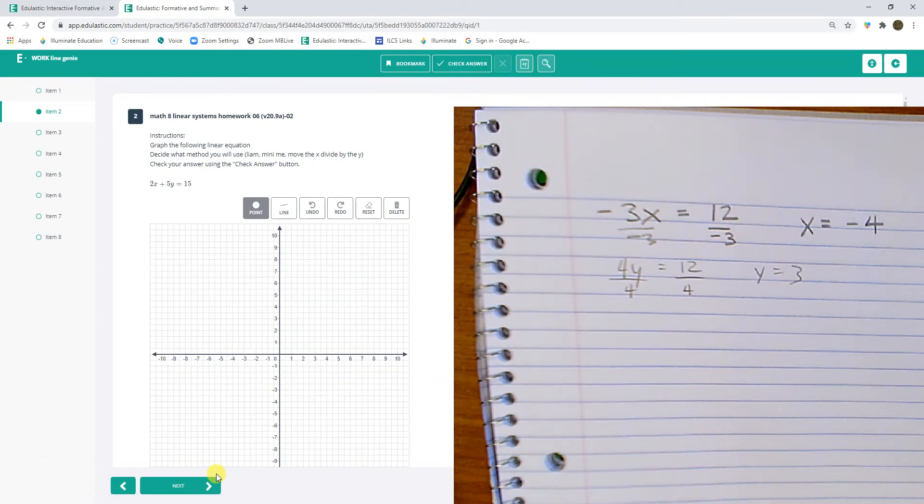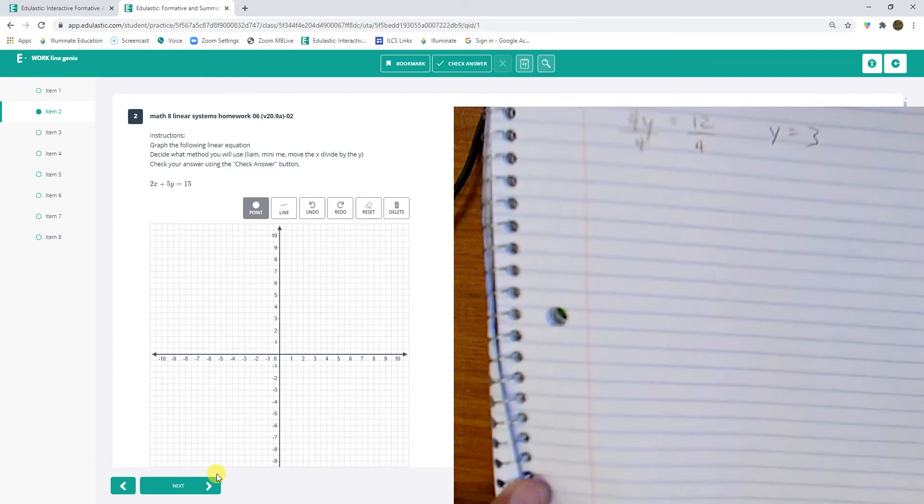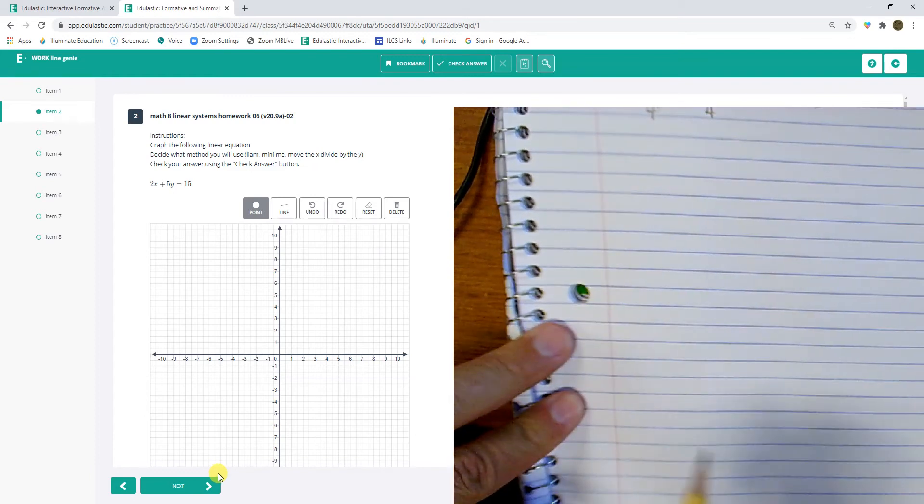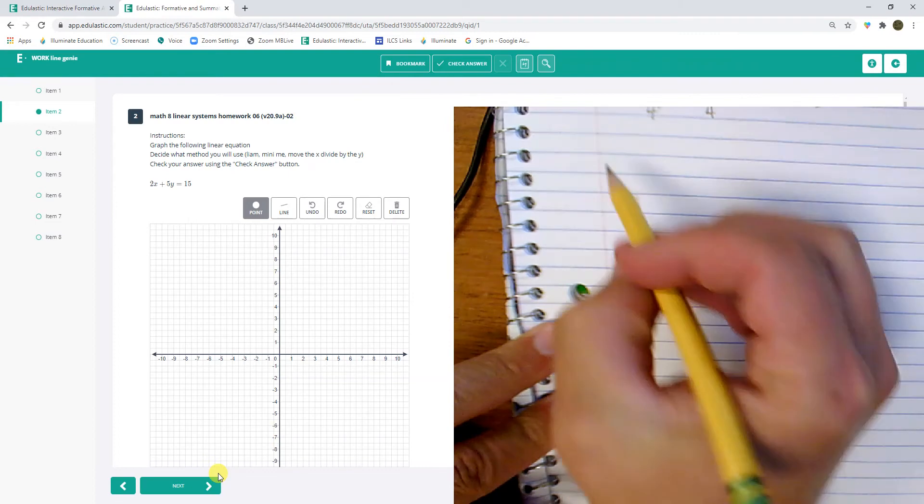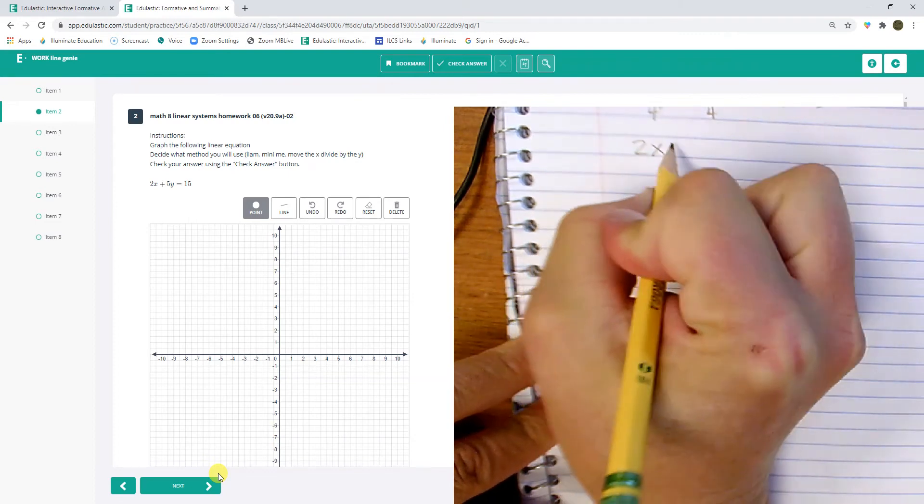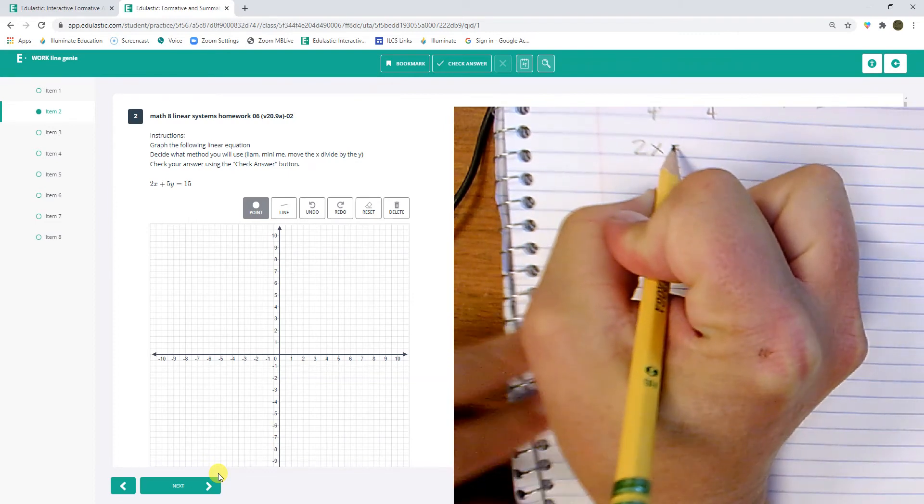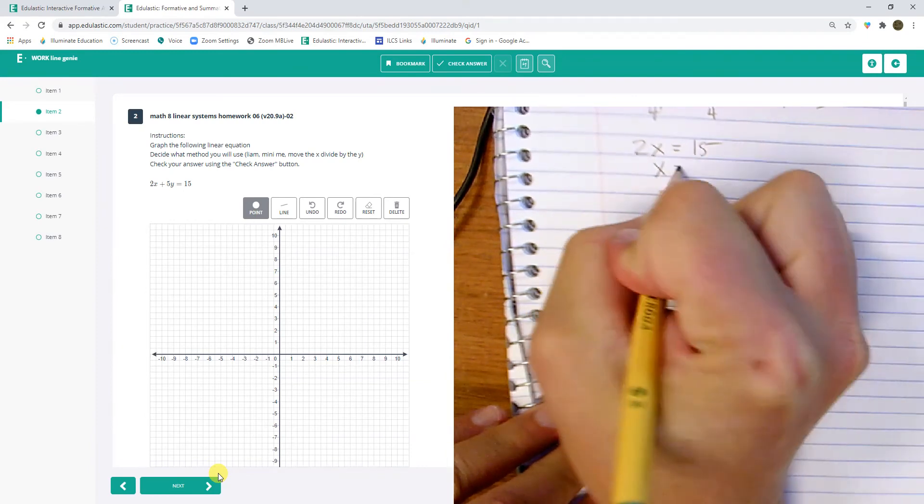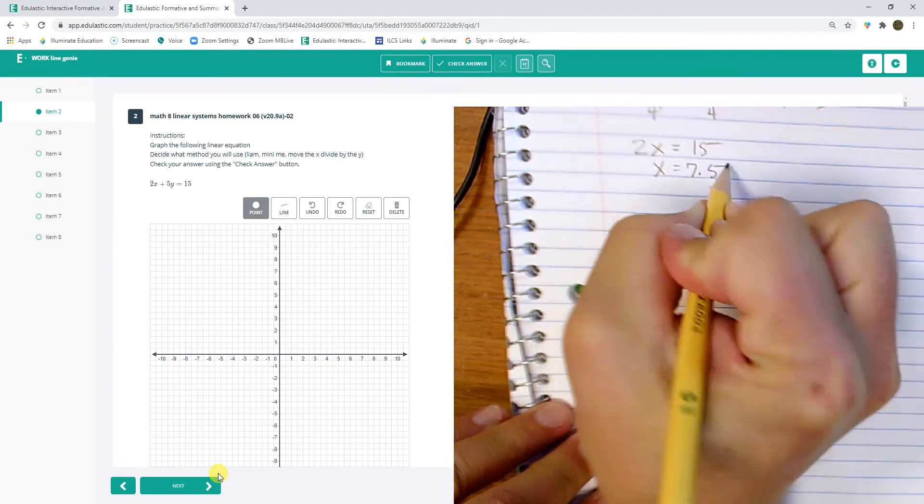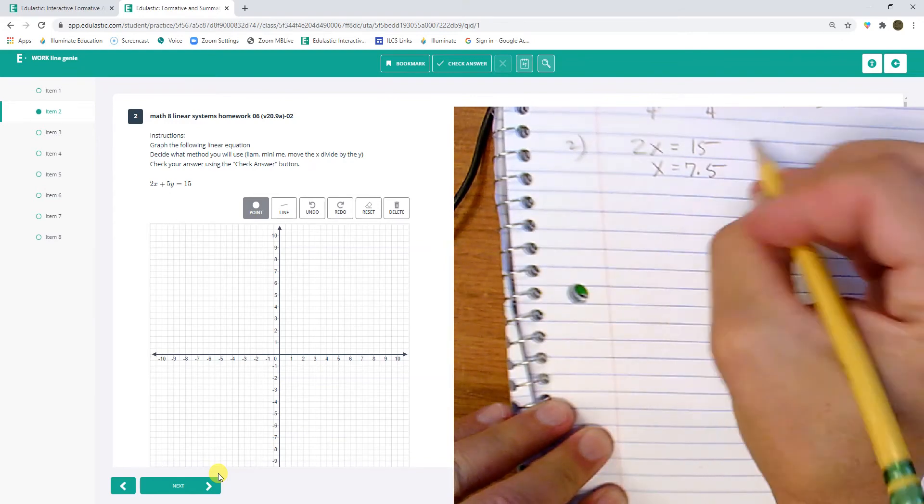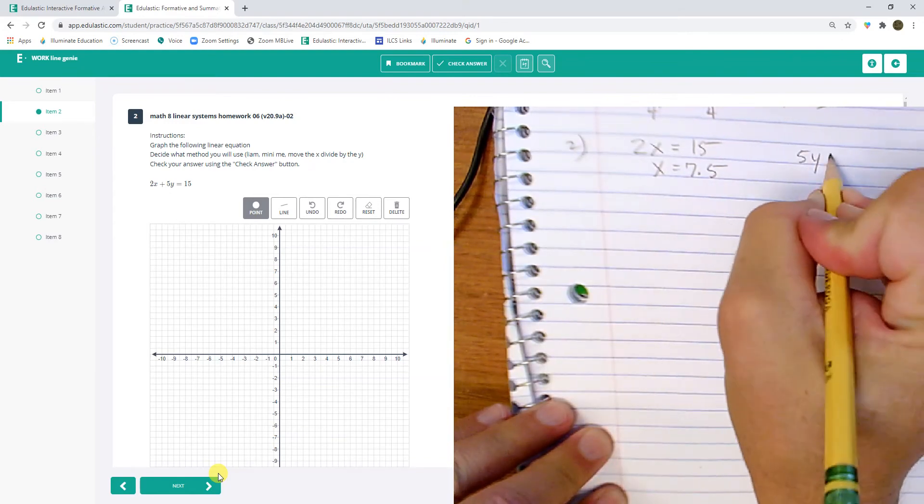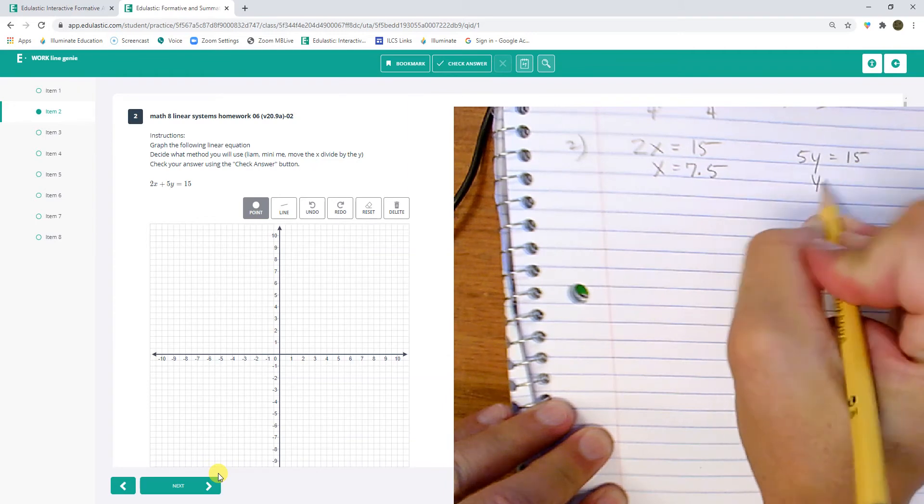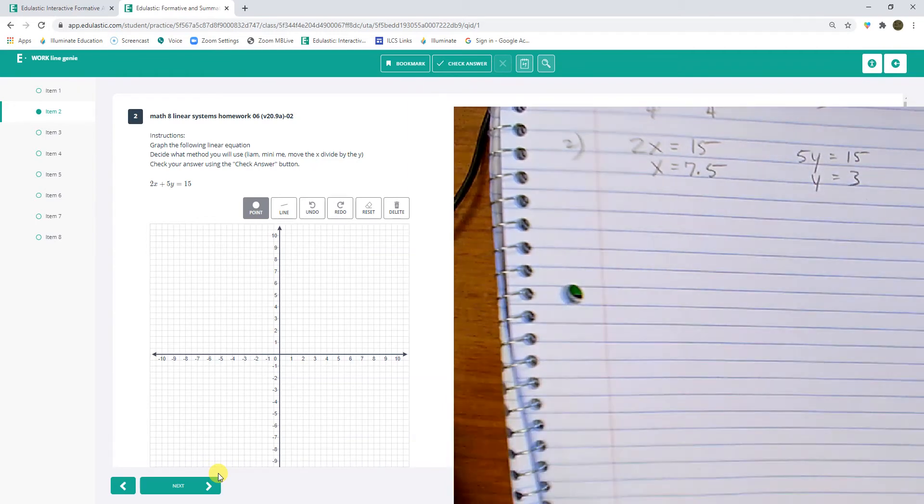All right, this one, I'm also going to use mini-me's on this. So I have 2x, you know, yeah, I can't do mini-me's. So I have 2x equals 15, which means x equals 7.5. This is number 2. And I have 5y equals 15, which means y equals 3. So I have 7.5 and 3.